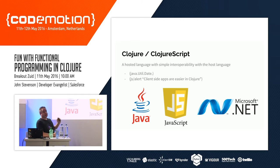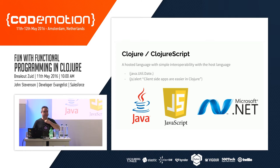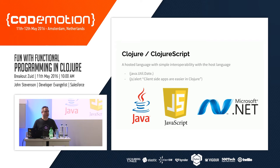You also get interoperability with the host language. If you're doing Java you can call things like `java.util.Date`; if you're doing JavaScript you can call JavaScript alerts or any other JavaScript libraries. It's quite adaptable — I've even seen people writing ClojureScript for Excel spreadsheet macros.